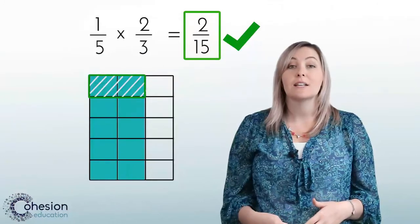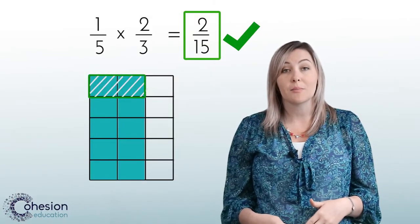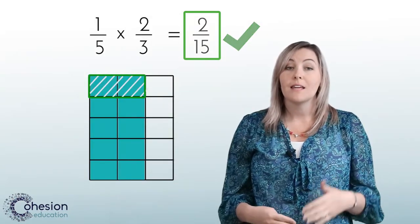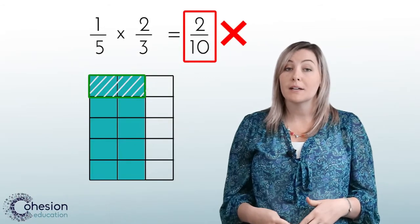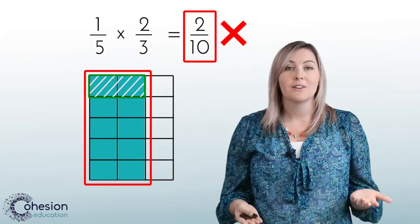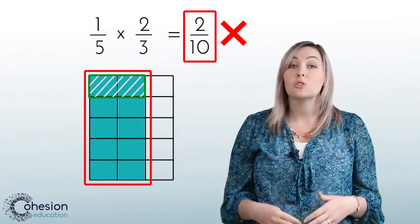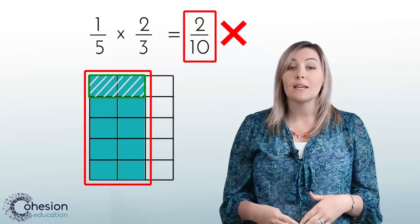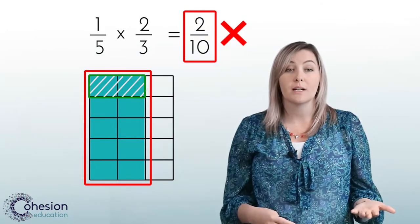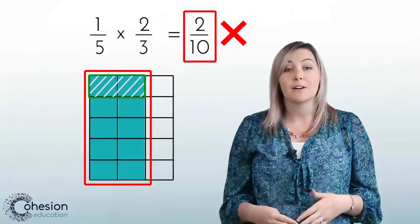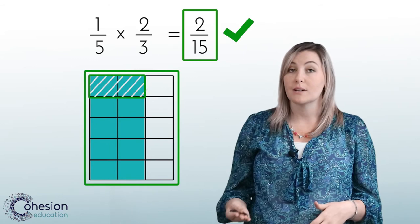Another common error that can occur is that students will correctly model the problem. However, they may find the incorrect product based on the model. For example, a student may say the product of one-fifth times two-thirds is two-tenths because they only counted the total shaded squares to find the denominator instead of all of the squares in the model.